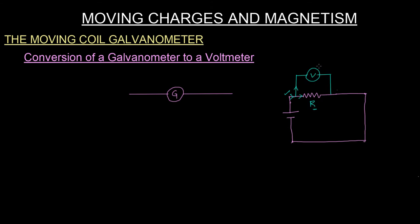For that, this resistance has to be a very very high value. So the voltmeter has a very very high resistance — that is the characteristic of a voltmeter. A voltmeter should have a very high resistance.